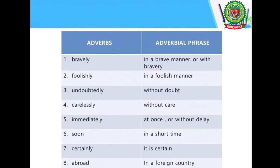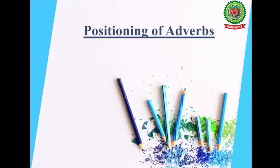Have a look at this table of adverbs and their adverbial phrases. First: 'bravely' — 'in a brave manner' or 'with bravery.' Second: 'foolishly' — 'in a foolish manner.' Third: 'undoubtedly' — 'without doubt.' Fourth: 'carelessly' — 'without care.' Fifth: 'immediately' — 'at once' or 'without delay.' Sixth: 'soon' — 'in a short time.' Seventh: 'certainly' — 'it is certain.' Eighth: 'abroad' — 'in a foreign country.'